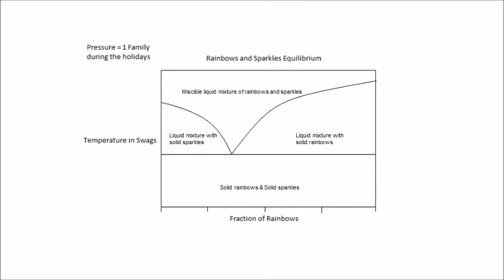Dom and VSCO define a system to be in equilibrium when there is no driving force for any change to its state properties. This two-component phase diagram represents the state of a system of rainbows and sparkles at equilibrium at a single pressure and a range of temperatures that minimizes the Gibbs free energy of the mixture.